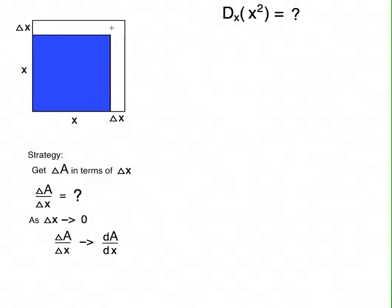So it'll be convenient for us to break up this change in area into three parts, because now we can easily talk about the areas of these three rectangles. Here you've got this long one on the top, side x times delta x height, that's the area. This one also has the same size, delta x times x.